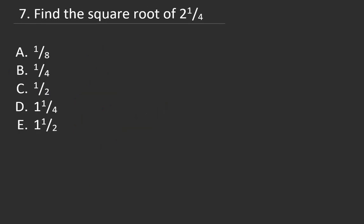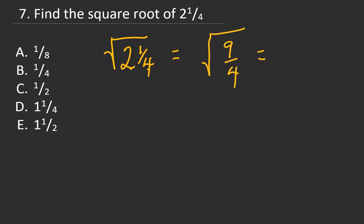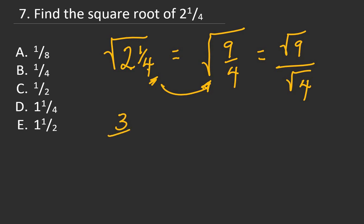Question 7: Find the square root of 2 and 1/4. Convert to improper fraction: 4 times 2 is 8 plus 1 is 9, so it's 9/4. The square root affects both numerator and denominator: square root of 9 is 3, square root of 4 is 2, giving 3/2, which is 1 and 1/2. The right answer is E.